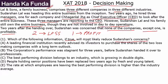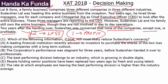Which of the following information, if true, will most likely reduce Sudarshan's concerns? What is Sudarshan's concern? He is not concerned about why one company is making profit — he is concerned about why two companies are making a loss. So the key focus is: why are the two companies making a loss? Any option dealing with the profitable company is useless because Sudarshan is not worried about it.